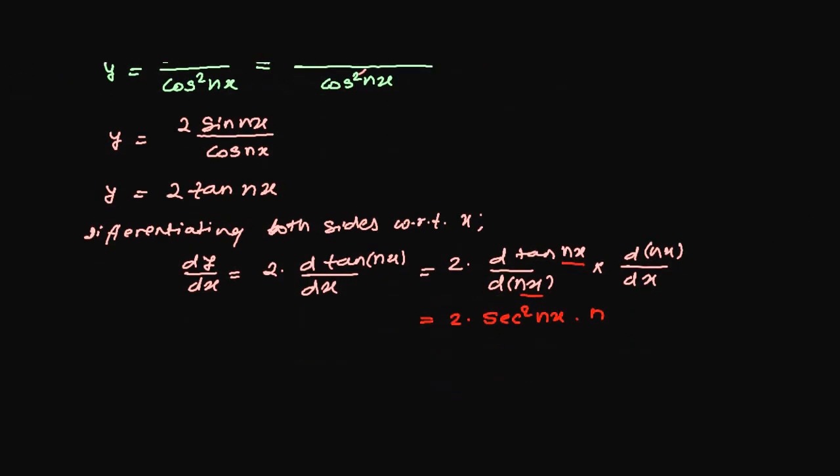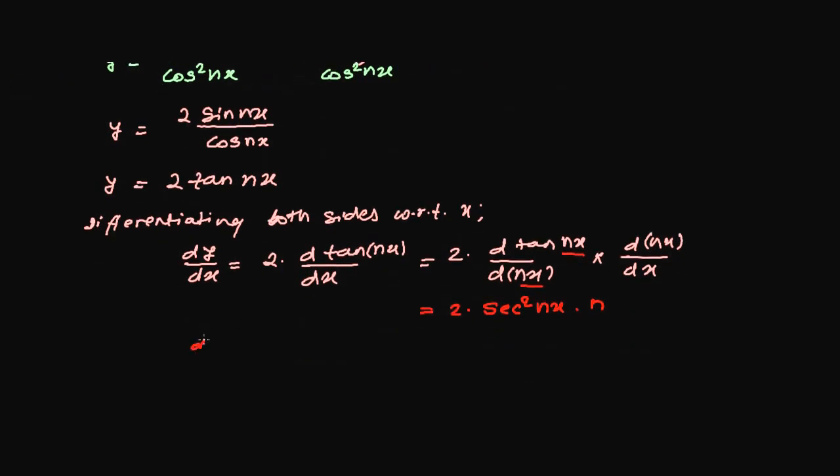So finally, what do we get? Our derivative or differential coefficient of y, dy over dx, is 2 times n, that is 2n sec square nx. This is our required answer.